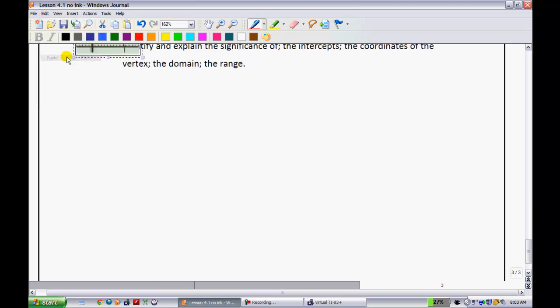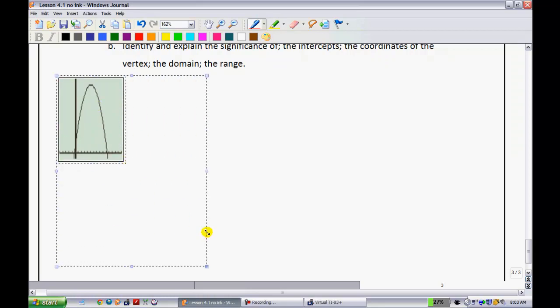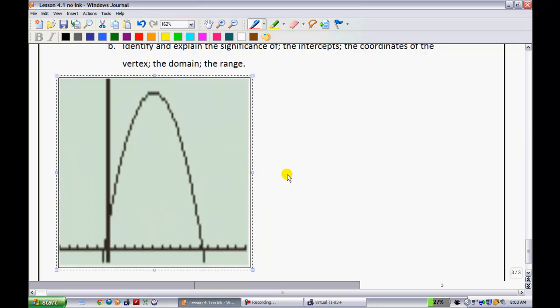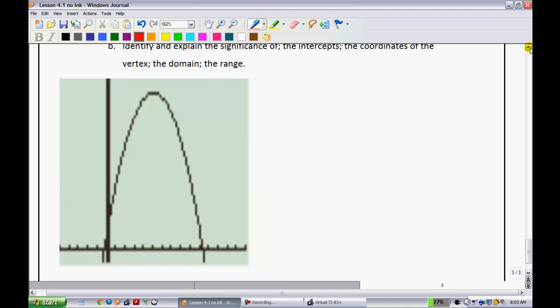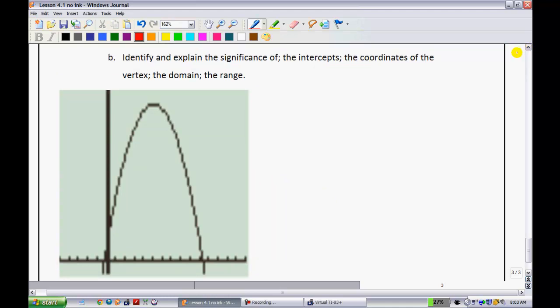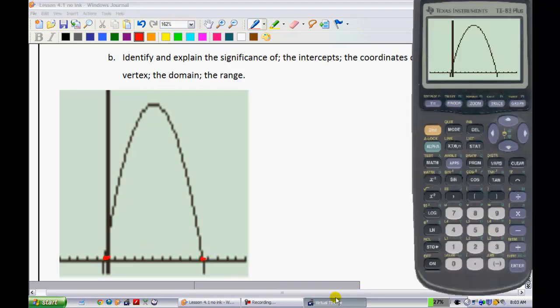So maybe what I'll do is I'll also paste it down here just so we can play with this graph a little bit. And so we get something that looks like so. Okay. So it wants you to go and identify and explain the significance of the intercepts. Let's start with the intercepts. The big ones that we're looking for are going to be the x-intercepts right here and right here. So let's start with those.